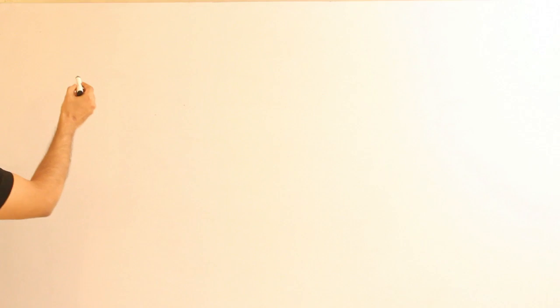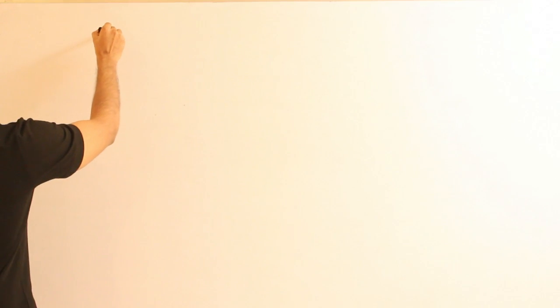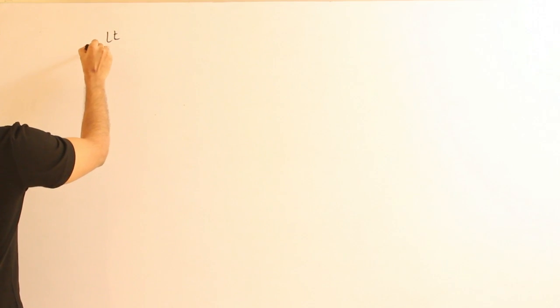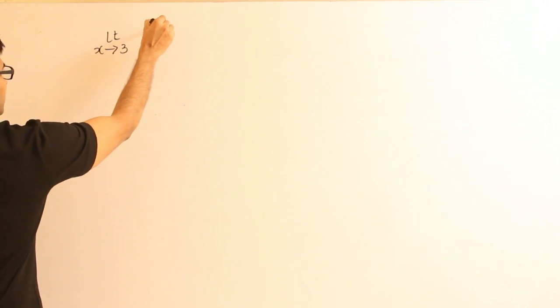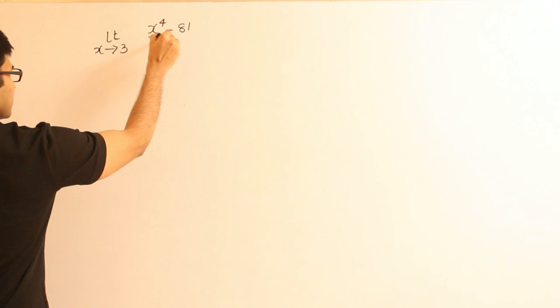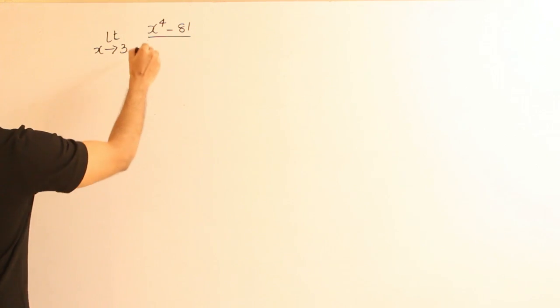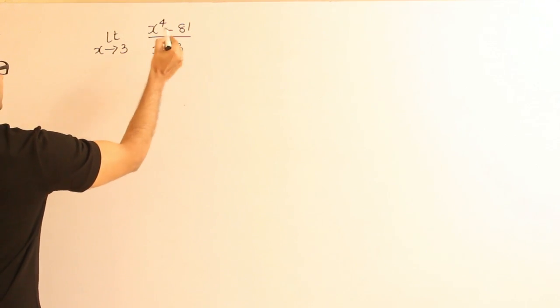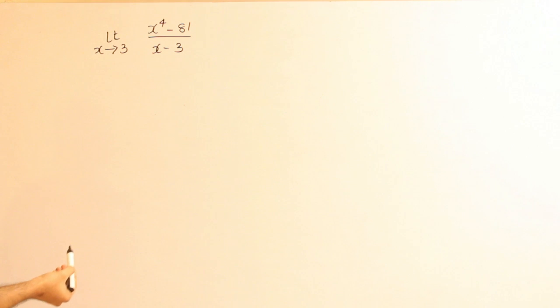I'll show you one example here, and we are going to use something called factorization. You must already know it. Let's see how to apply it. Let us say the question is: limit x tends to 3 of x⁴ minus 81 divided by x minus 3. If you have something like this, how are you going to find out the limit?